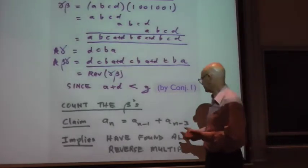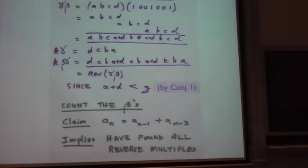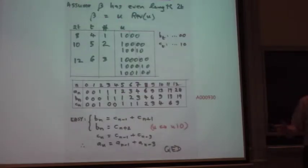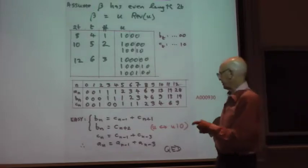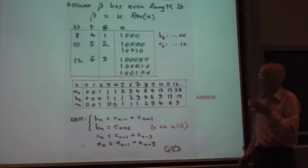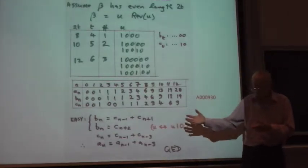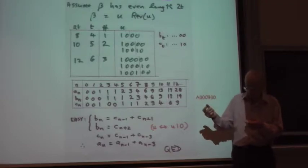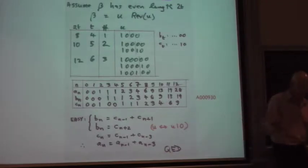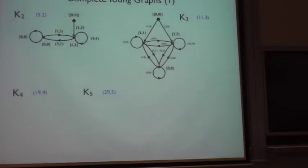Now we can enumerate them, and it's not difficult to show that we get the same generating function. By direct counting, we can show that the number of these betas is equal to the numbers that come out of the generating function that we got from the adjacency matrix. So that proves, modular that conjecture, that we've established what all of the reverse multiples are in this case for the cyclic graphs.